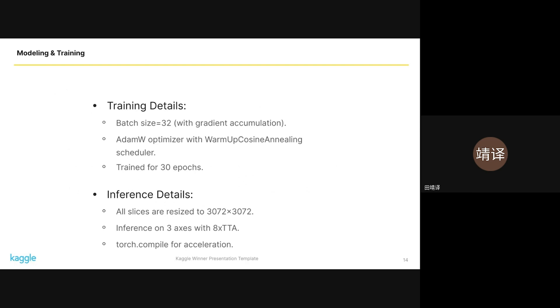For our training process, we used a batch size of 32 with gradient accumulation and AdamW optimizer with a warm-up cosine annealing scheduler, trained for 30 epochs. For inference, we upscaled the slice to 3072 and employed test-time augmentation to ensure robustness and accurate prediction. We also used Torch Compile to accelerate the inference process.